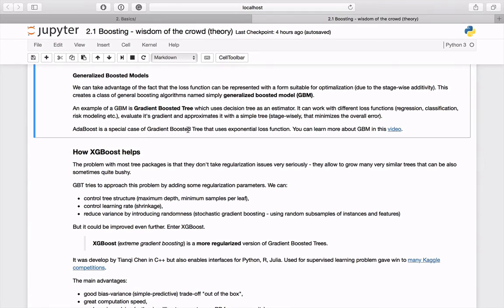A special case of gradient boosted tree is also AdaBoost, which uses exponential loss function. The problem with gradient boosted trees is that they don't take regularization issues very seriously.